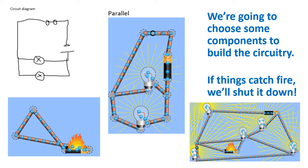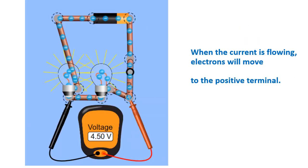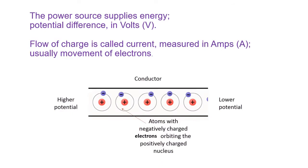We're gonna choose some components to build the circuitry — if things catch fire, we'll shut it down. When the current is flowing, electrons will move to the positive terminal. The power supply supplies energy as potential difference, measured in volts.